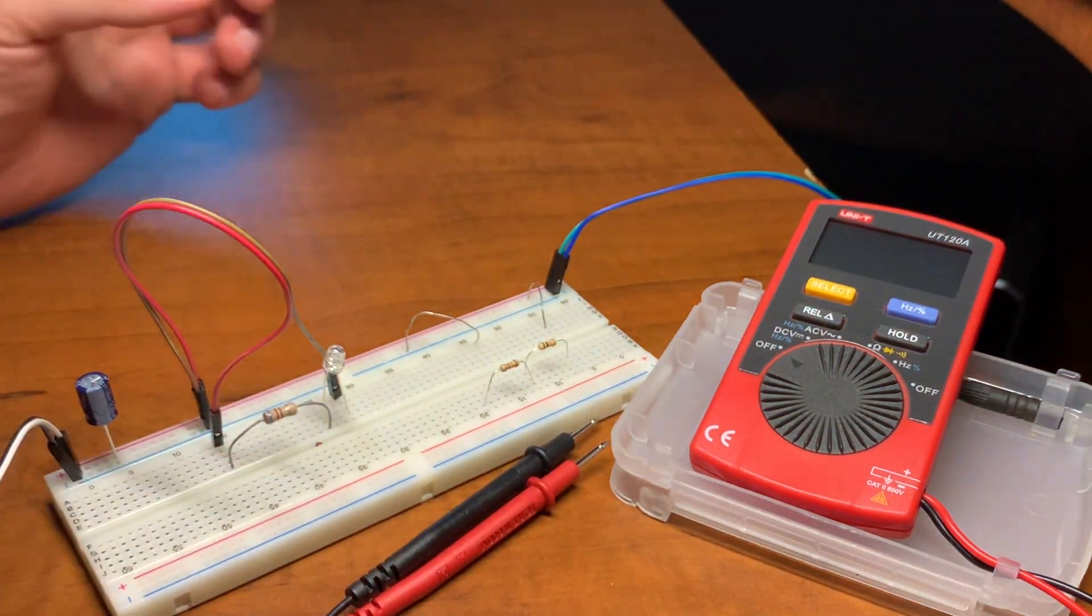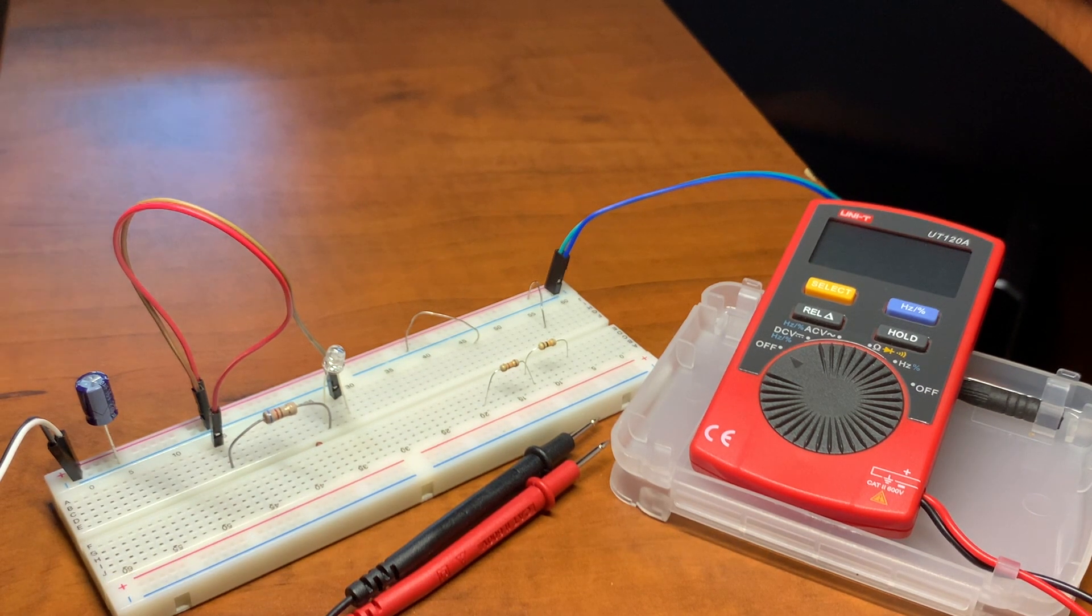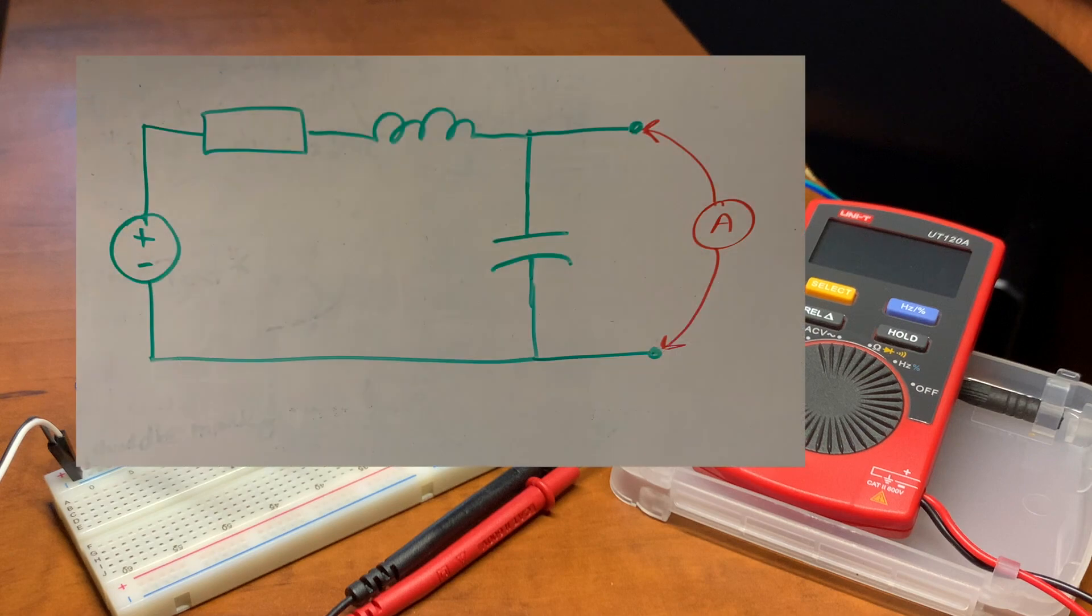You may have noticed that this multimeter doesn't have current measurement function. I chose that on purpose because on regular multimeters in order to measure current you have to switch the probes, but on fixed lead multimeters you can easily switch it to current mode when you're meant to measure voltage and if your probes are still connected to the device you can easily damage it.